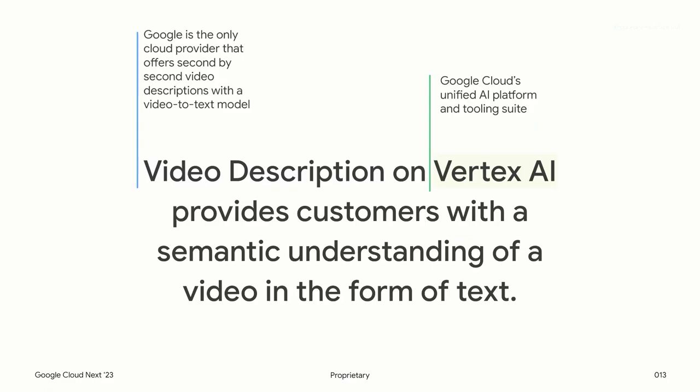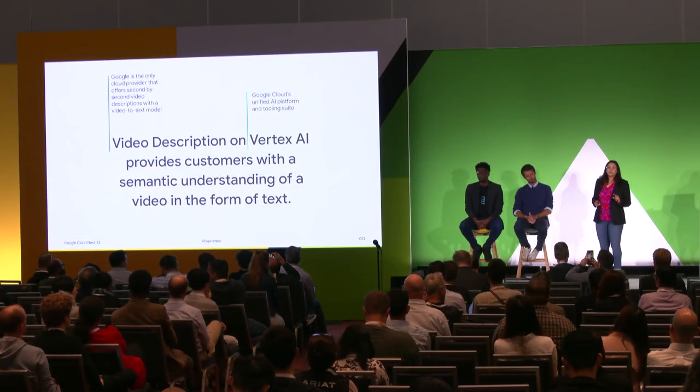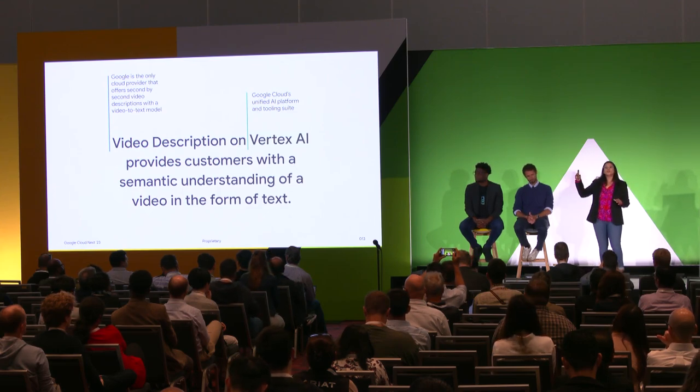Now let's move on to video description. Video description on Vertex AI is a feature with which customers can get semantic understanding of a video in the form of text. The thing to remember is this is not video summarization, where you start to lose information for longer videos. And this is not speech-to-text or closed captioning, where the model focuses on listening to the video to make sense of it. In video description, the model is seeing what's happening in the video to make sense of it.